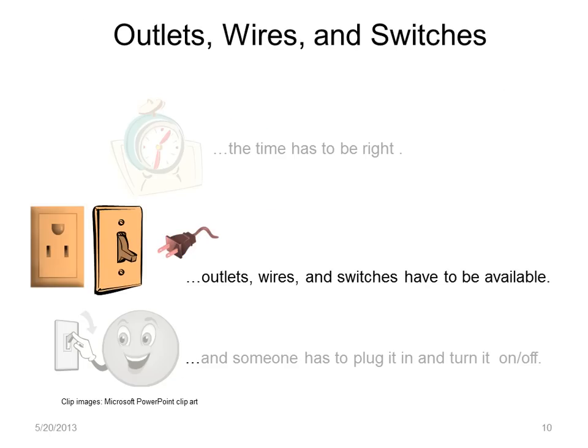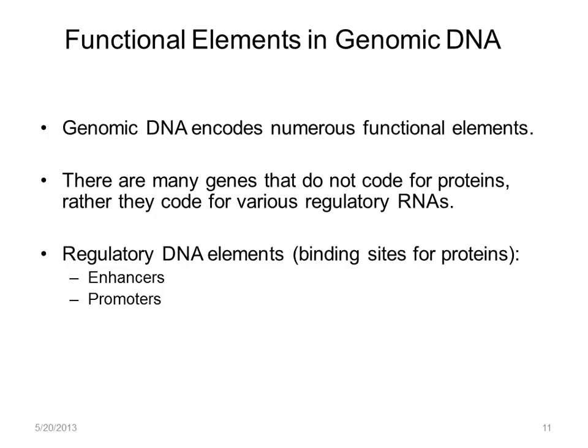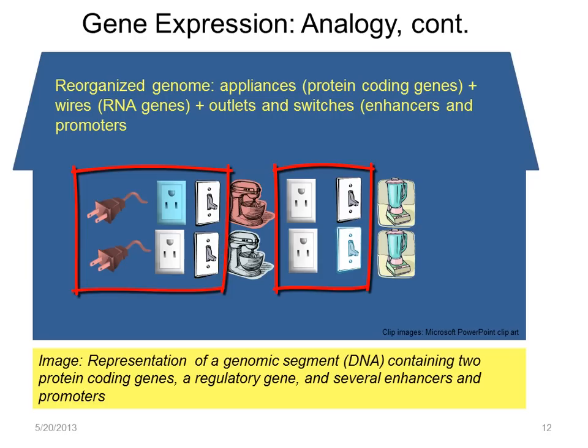In biological terms, these are called functional elements, which include genes that encode a variety of regulatory RNAs — short RNAs that help control gene expression — as well as other non-coding sequences, such as enhancers and promoters, which act as binding sites for proteins called transcription factors that affect a gene's expression. Let's add these regulators, wires, outlets, and switches to our stylized genome.